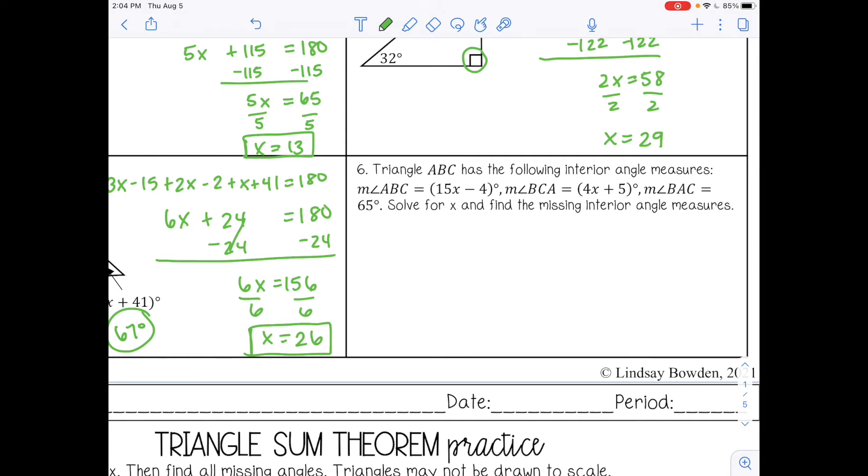And then the last one, triangle ABC, has the following interior angle measures. And then they're listed out. If you want to draw a triangle, you can. But since we know these are all interior angles, we know they all have to add up to sum to 180. So I'm just going to list all three measures out, equal to 180, and then solve. Like terms, 15X plus 4X is 19X. Negative 4 plus 5 plus 65, that's 66, positive 66. Subtract on both sides. Divide by 19. So X is 6.